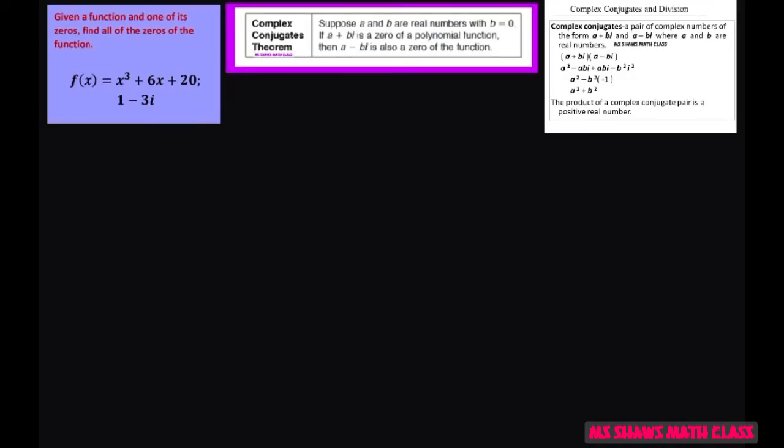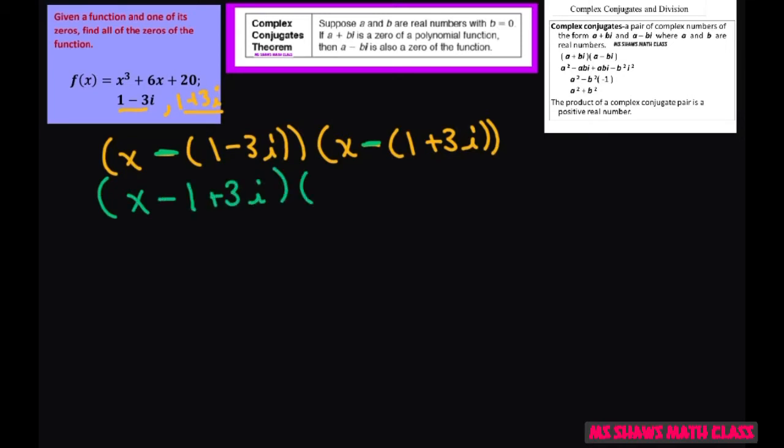So since these are two zeros, I'm going to form a polynomial with these two zeros given. So I'm going to write this as x minus quantity 1 minus 3i times x minus quantity 1 plus 3i. Now I'm going to distribute this negative here and get rid of those parentheses. So you have x minus 1 plus 3i times x minus 1 minus 3i.